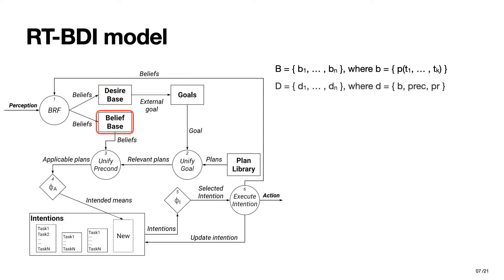A desire D is defined as a tuple B, prec, PR, where B is a belief literal, hence a belief atom or its negation, representing the agent's desire of either achieving or verifying a certain state of the system. Prec, then, is the set of preconditions, hence the conjunction of belief literals needed for the activation of the desire. And finally, PR represents the priority of the desire. In particular, PR is used by the selection functions discriminating the most relevant goals for the agent.